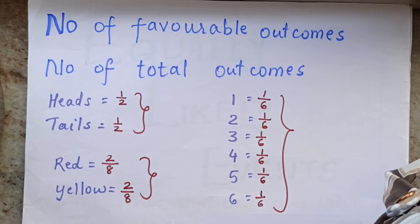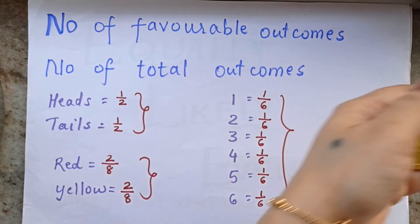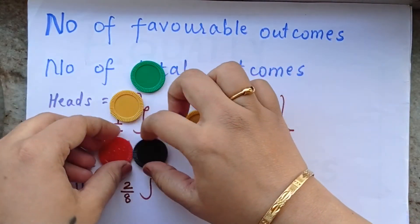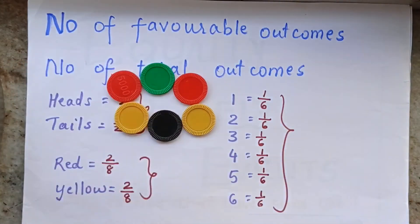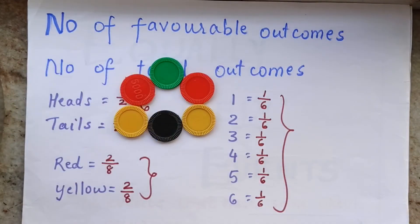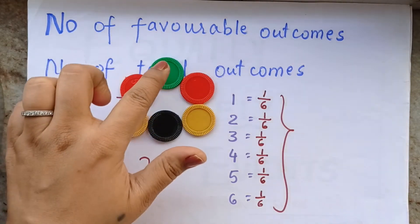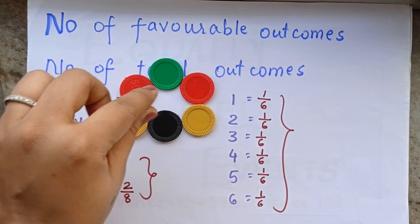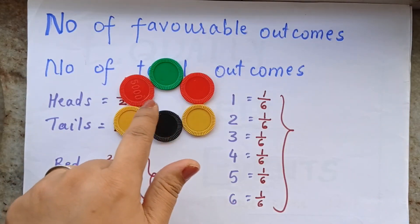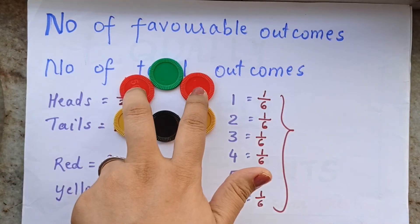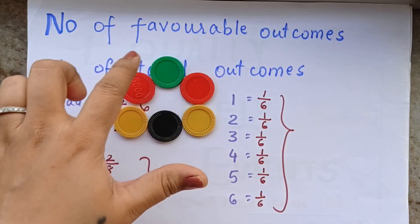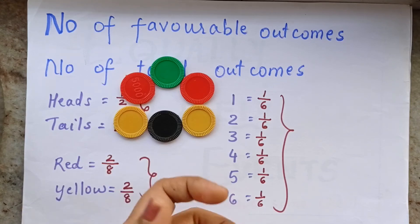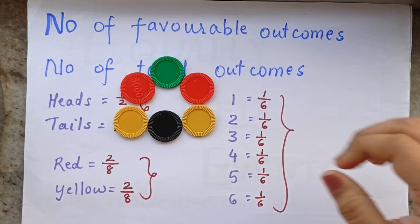Now let's take an example of events that are NOT equally likely. Using these tokens, the likelihood of getting a green color is 1/6, but the likelihood of getting a red color is 2/6. Since 1/6 and 2/6 are not equal, the events of getting green or getting red are not equally likely outcomes.